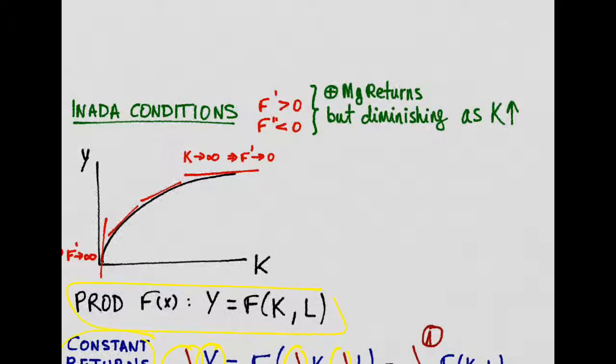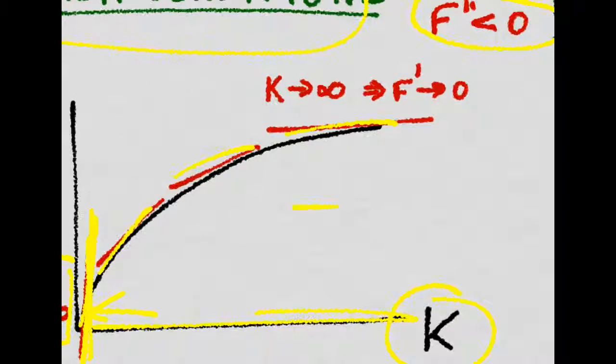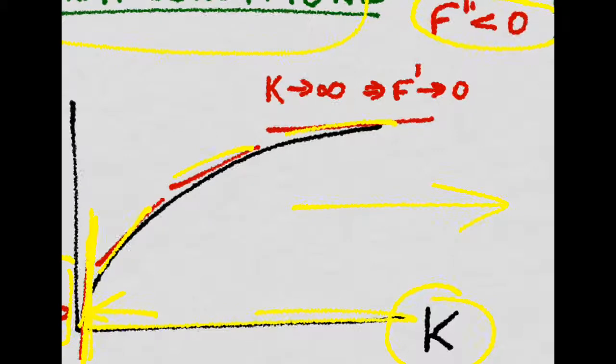This production function has a positive slope over any level of capital, that is, a positive first derivative, but there are diminishing marginal returns as we increase the capital level. The second derivative is negative, so the slope, even though positive, is decreasing. As the Inada conditions say, whenever the capital approaches zero, we will get a slope that is almost vertical, and whenever the capital gets really big, then we will have an almost flat slope, with the first derivative tending to zero.